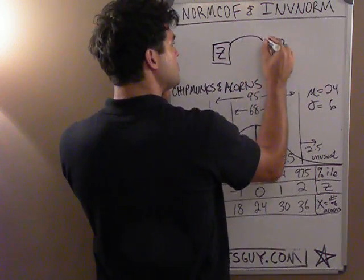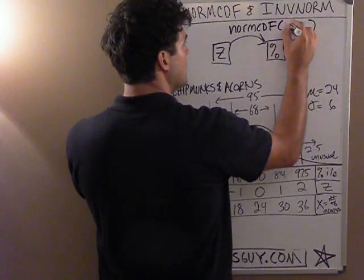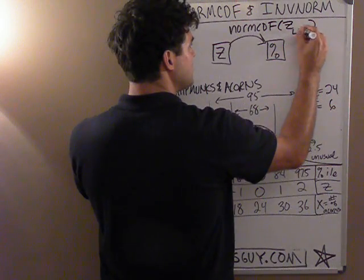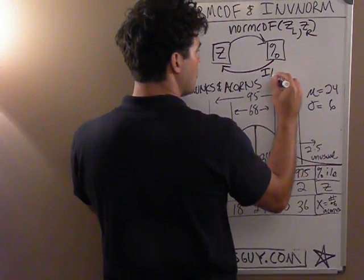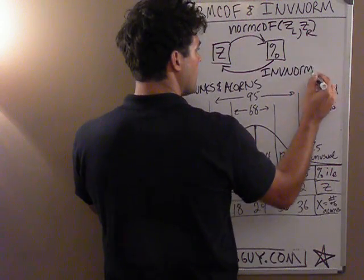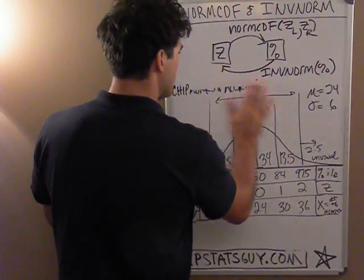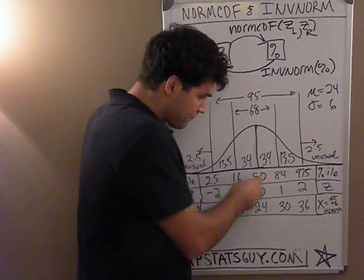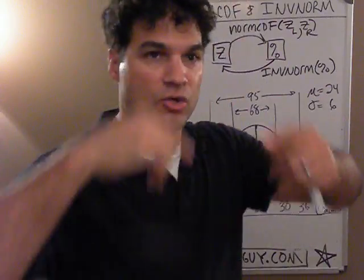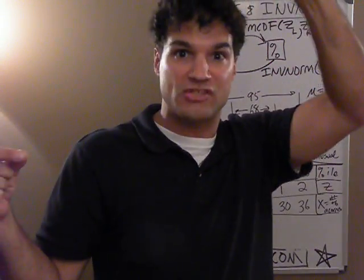To go from Z-score to percentile, we use the function normcdf, and your input is two Z-scores: Z-left and Z-right. To go the other way, you use the function called inverse norm — you put the percentile in and out pops the Z-score. There's a table in the back of your book, and it never changes, so a Z-score always corresponds with a specific percentile.